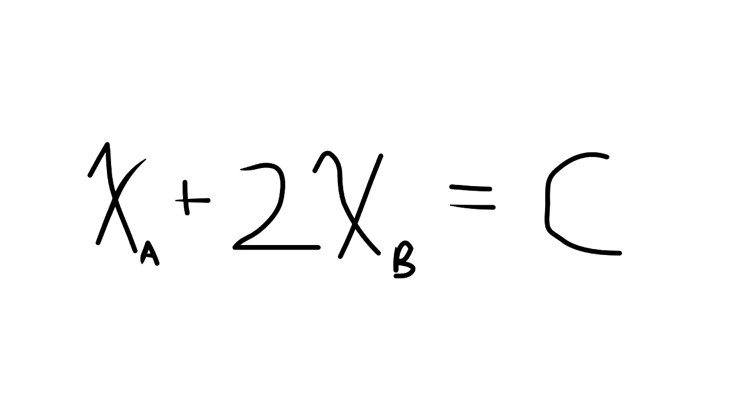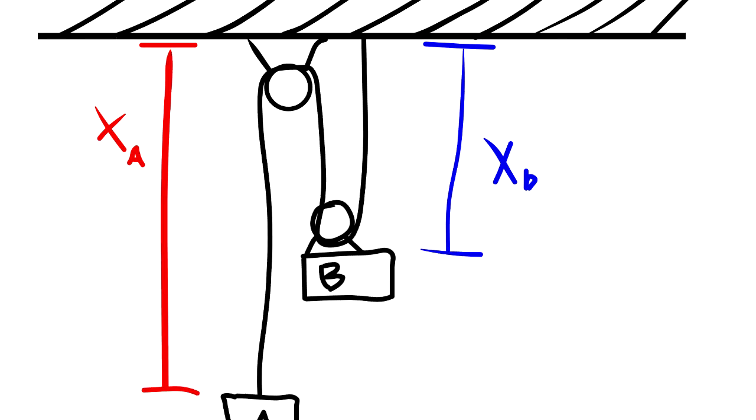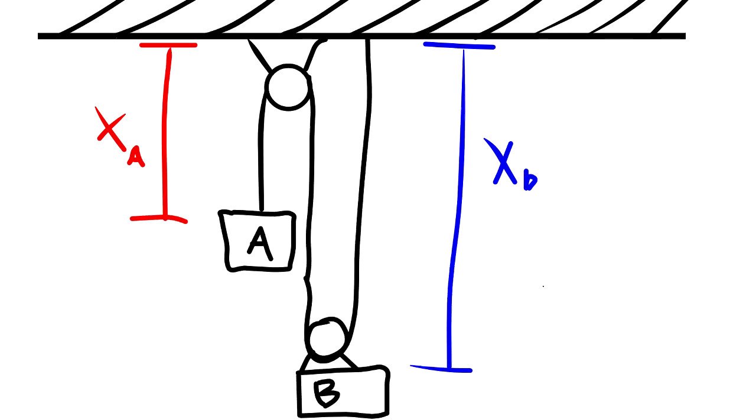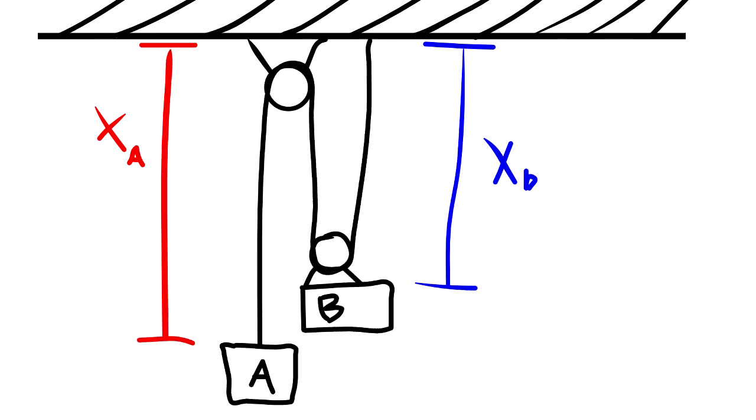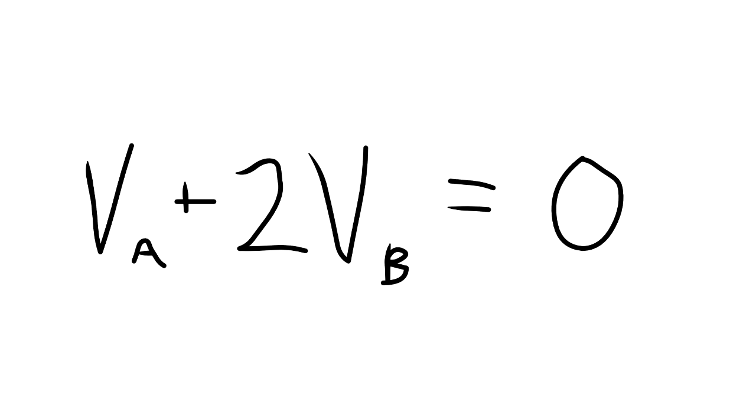This equation is useful, but now let's imagine that the pulleys are moving. Our dimensions X sub A and X sub B are now changing with time, meaning that blocks A and B have a velocity. We can differentiate our original equation as follows. Differentiating X sub A plus 2X sub B with respect to time gives V sub A plus 2V sub B, since the derivative of a position function is a velocity function.